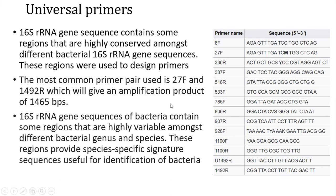In addition to the conserved regions used for designing primers, there are certain regions within the 16S rRNA gene sequence which are highly variable among different bacterial genus and species. In fact, these are the regions that provide species-specific signature sequences that can be useful for identification of unknown bacteria.